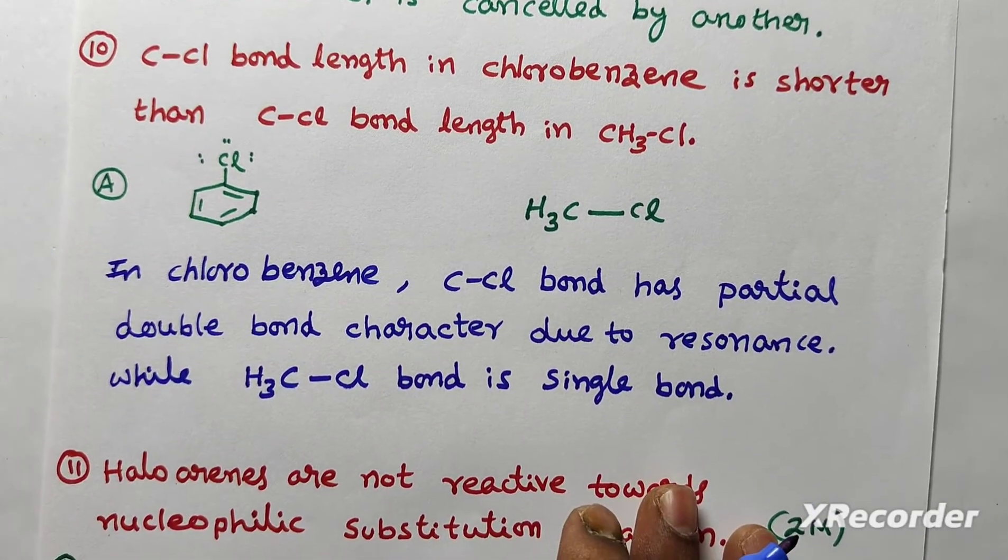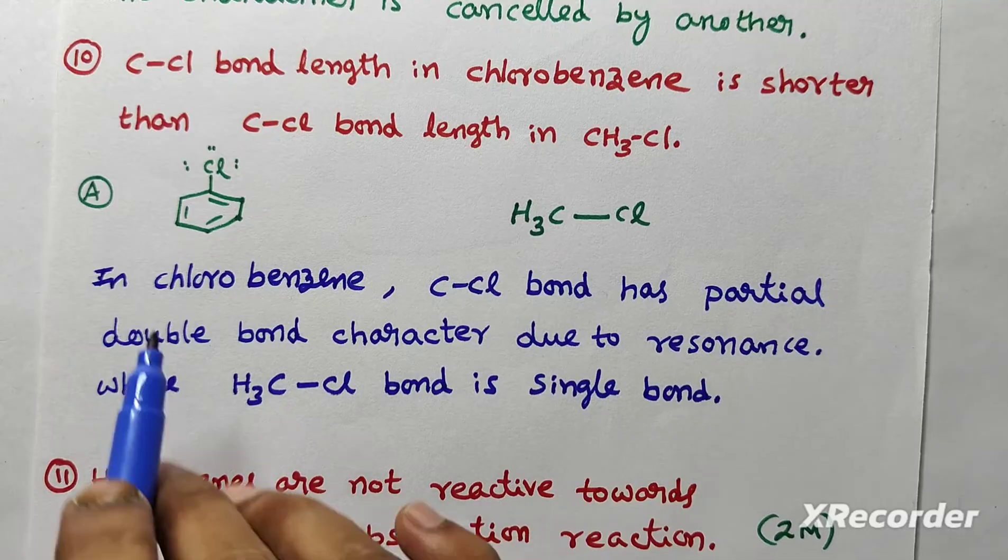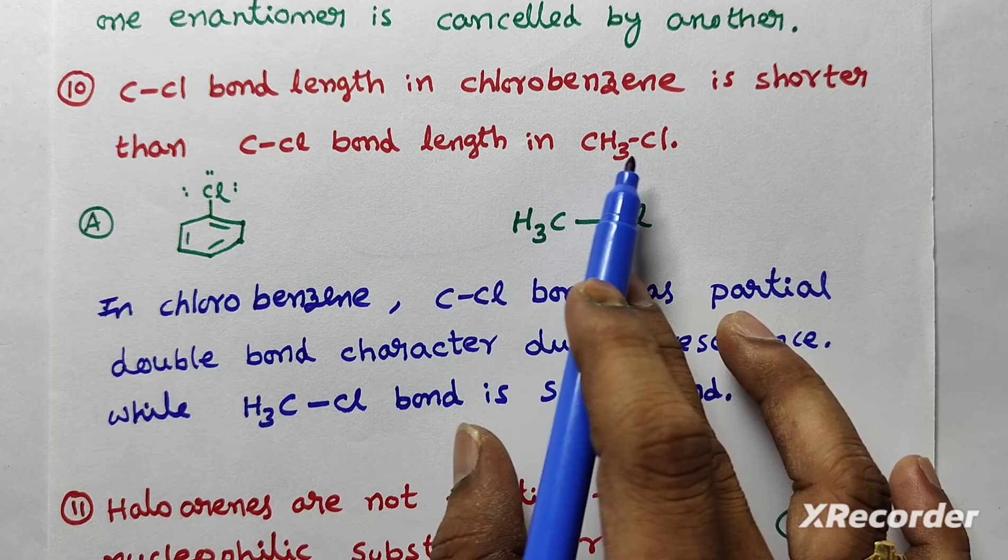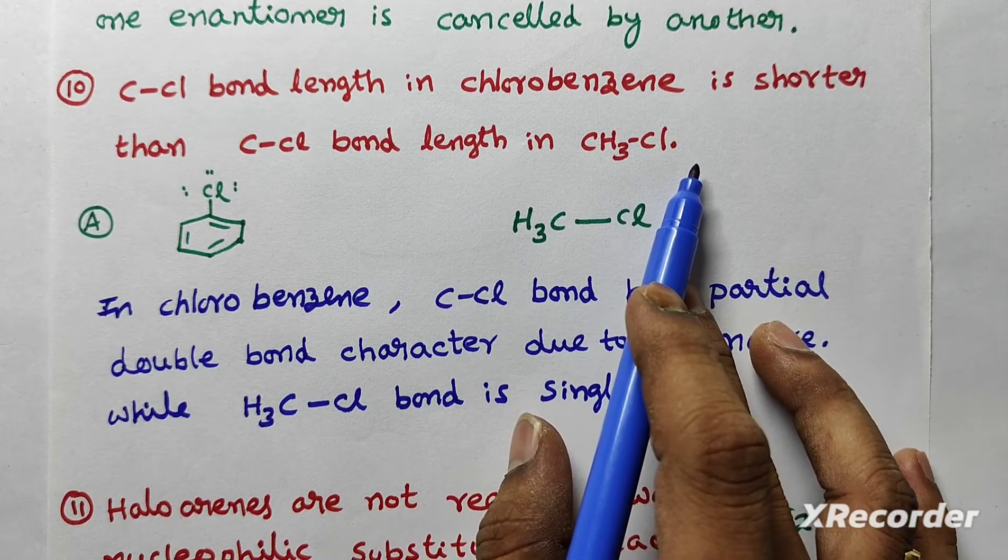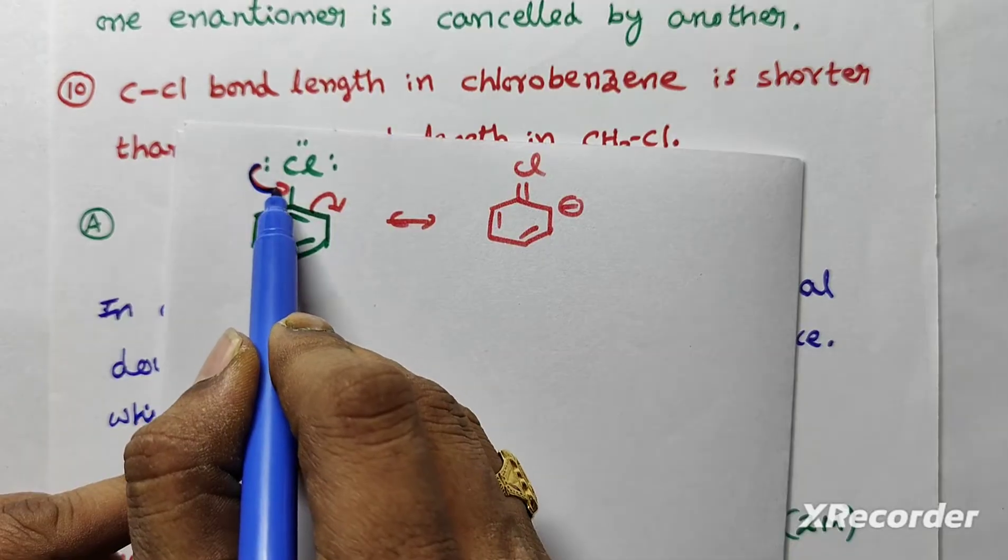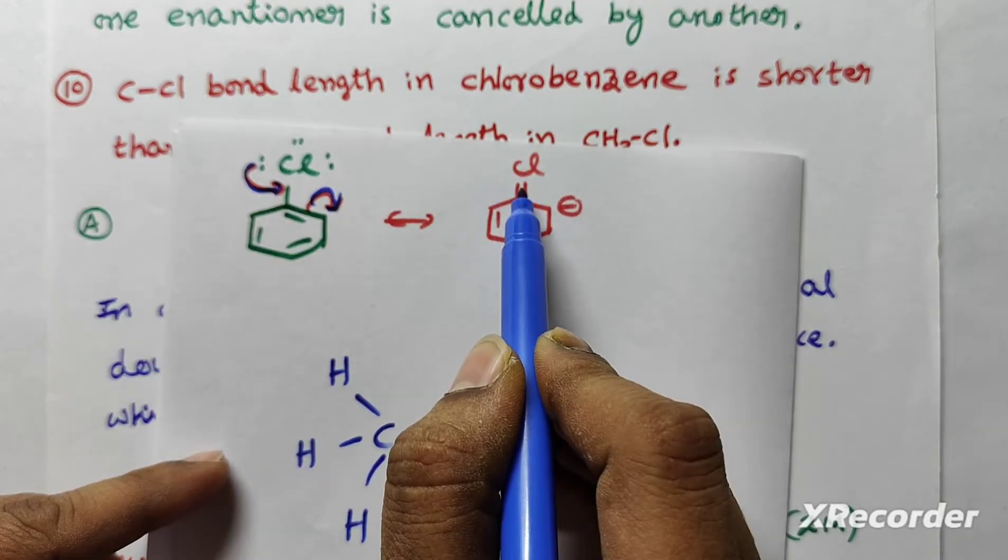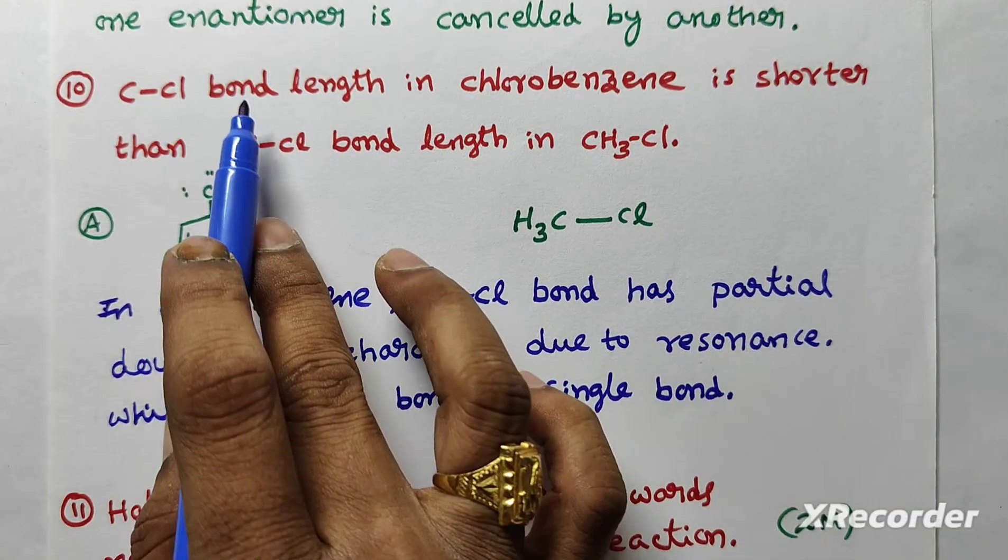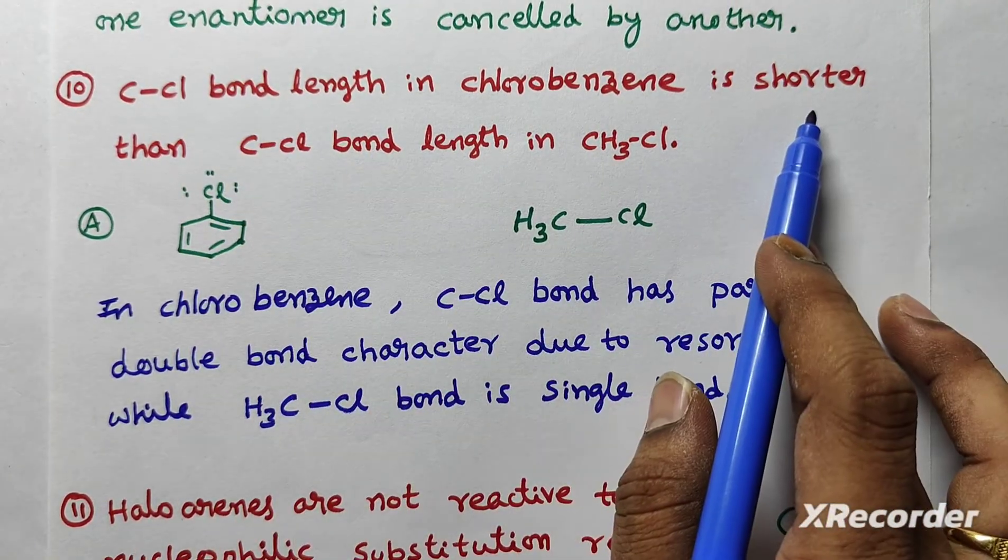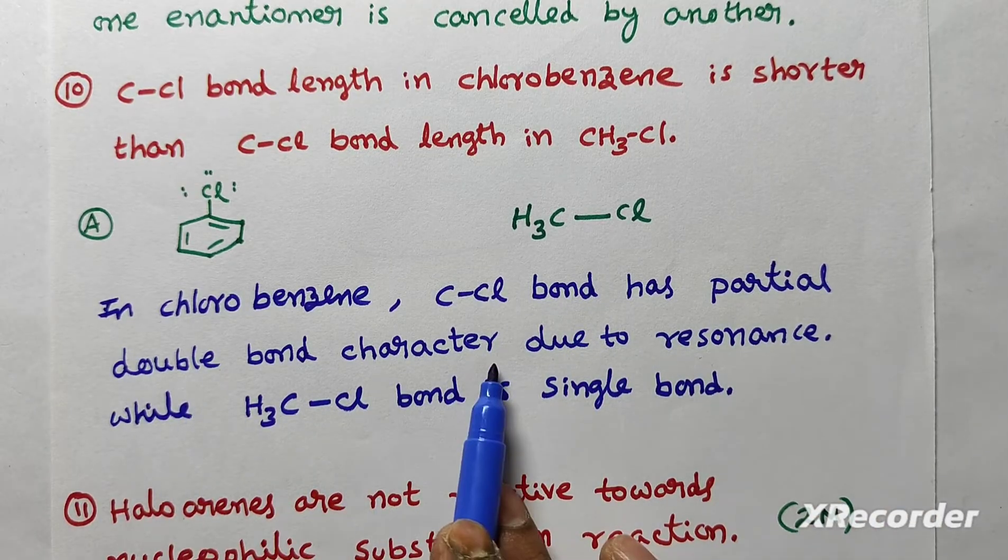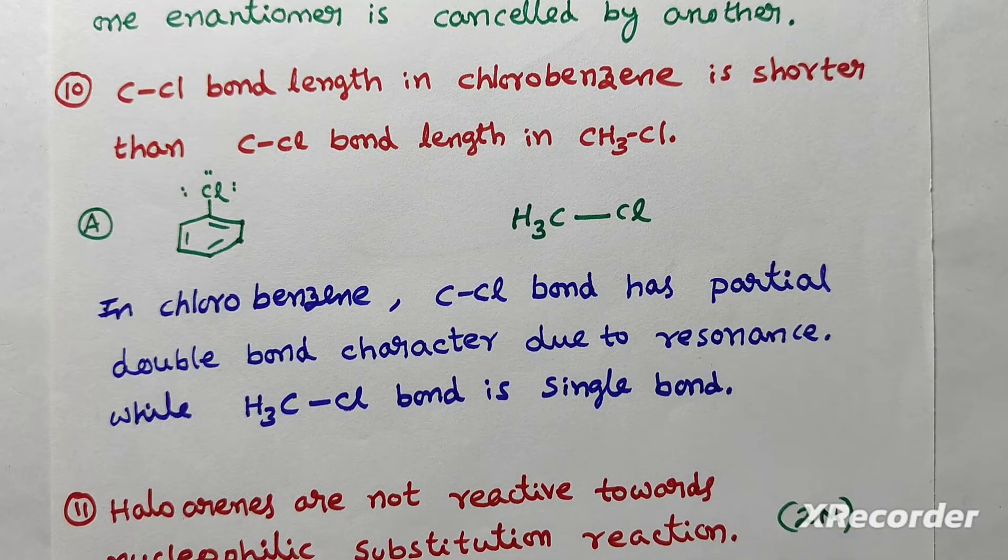Next question. C-Cl bond length in chlorobenzene is shorter than C-Cl bond length in methyl chloride. Give reason. Just before I told you. In chlorobenzene, there is a partial double bond character due to resonance. When it has partial double bond character, bond length is also less. So answer is, in chlorobenzene, C-Cl bond has partial double bond character due to resonance.